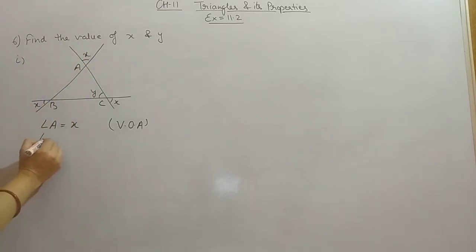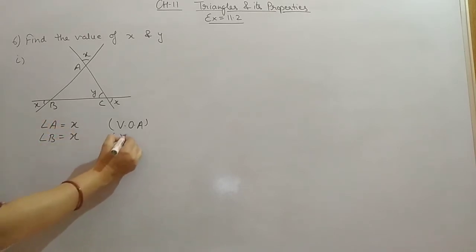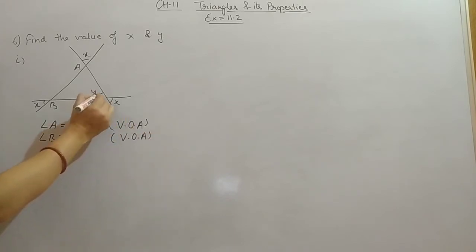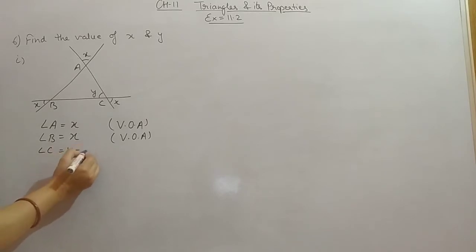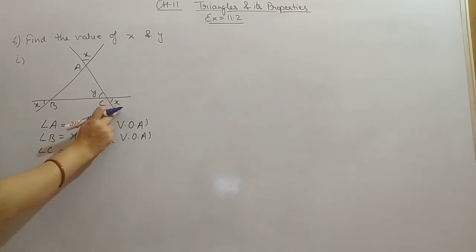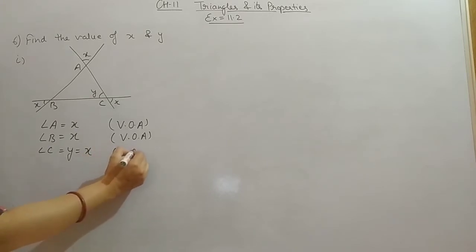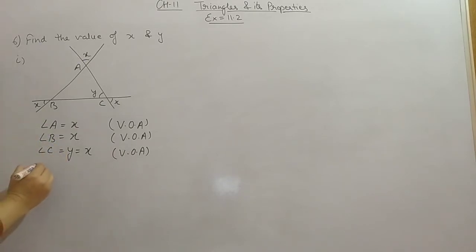Similarly, angle B will also be equal to X — same reason, vertically opposite angles. Now the third angle C, which is given equal to Y, will also be equal to X, because Y and X are vertically opposite angles. So all three interior angles are equal to X. Now we can use the angle sum property.